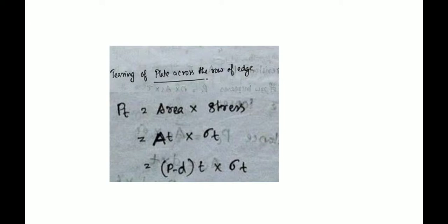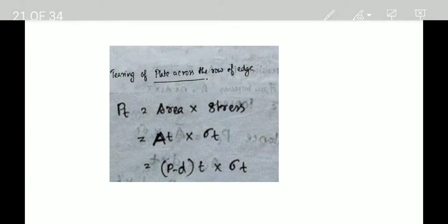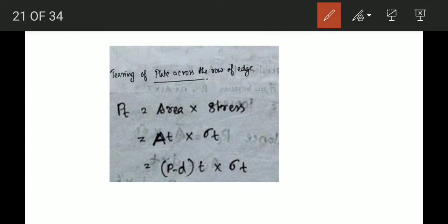We are learning tearing. The tearing resistance equation is Pt = (P - d) × t × σt, where P is the pitch, d is the hole diameter, t is the thickness, and sigma is the tensile stress.